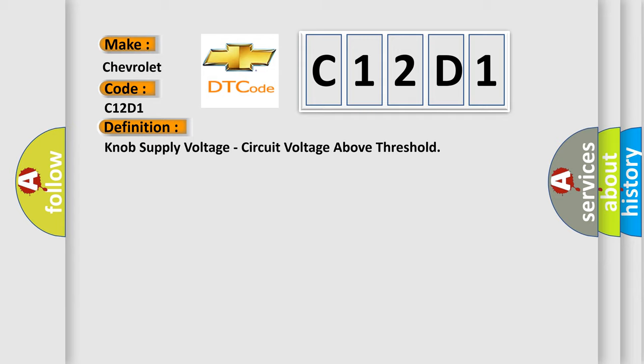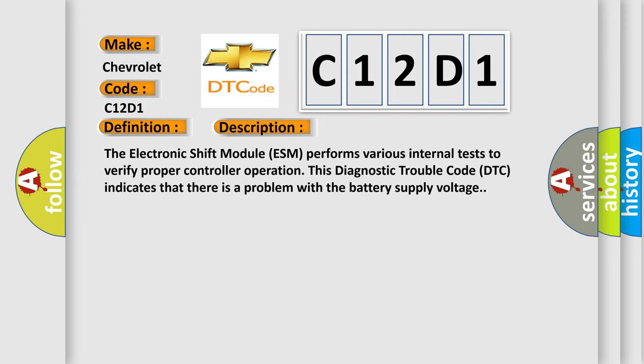And now this is a short description of this DTC code. The Electronic Shift Module (ESM) performs various internal tests to verify proper controller operation. In addition, this Diagnostic Trouble Code (DTC) indicates that there is a problem with the battery supply voltage.